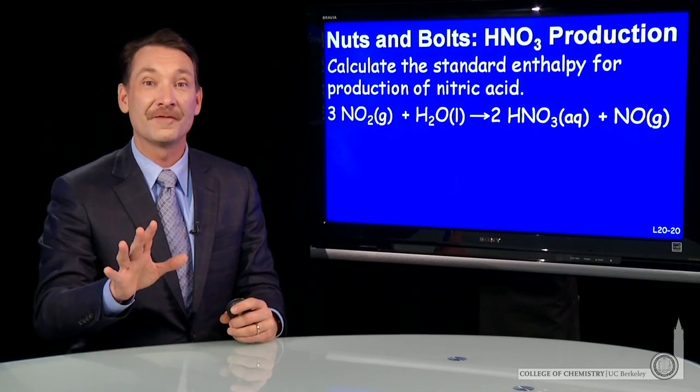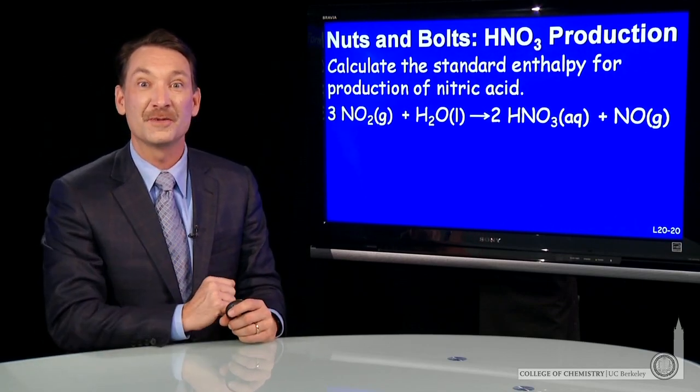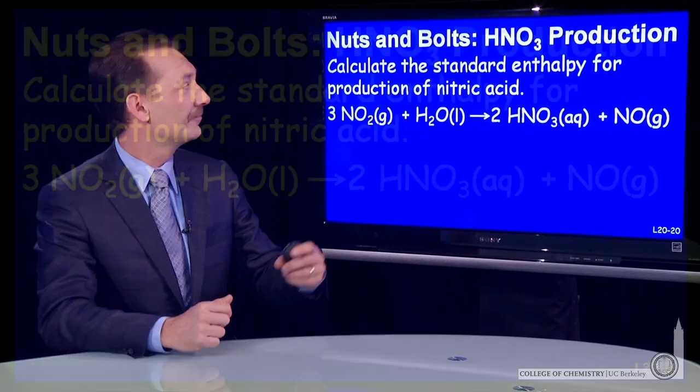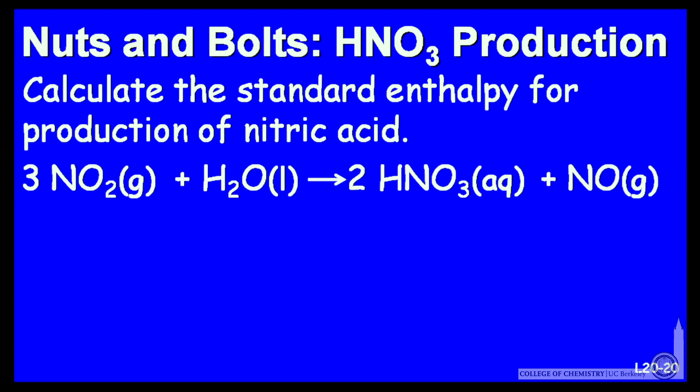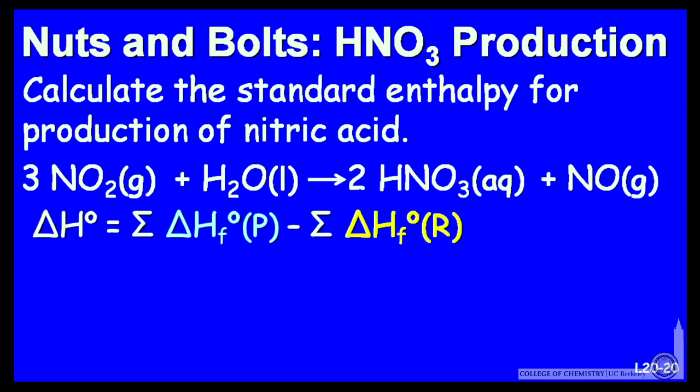Here's a calculation involving standard enthalpies of formation. Let's calculate the standard enthalpy change for the production of nitric acid by this chemical reaction. We know we can do that by taking the sum of the heats of formation of all the products and subtract the sum of the heats of formation of all the reactants.